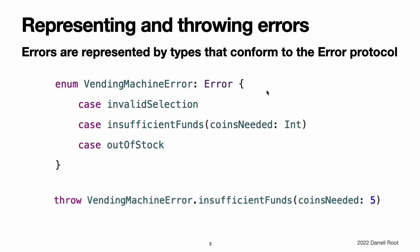For example, here's how you might represent the error conditions of operating a vending machine inside a game. Throwing an error lets you indicate that something unexpected happened and the normal flow of execution cannot continue. You use a throw statement to throw an error. For example, this code throws an error to indicate that five additional coins are needed by the vending machine.